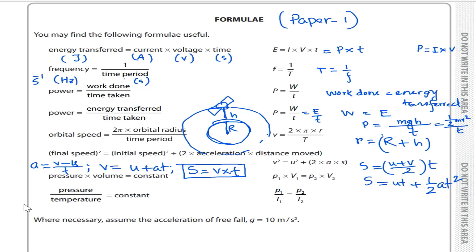Pressure times volume equals constant. For a fixed mass of gas at constant temperature, volume is inversely proportional to pressure. This is known as Boyle's law — volume is inversely proportional to pressure at constant temperature.